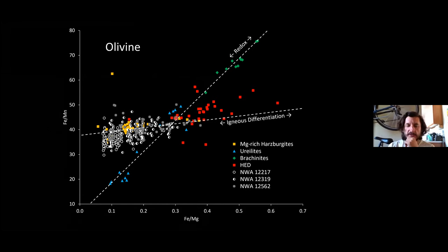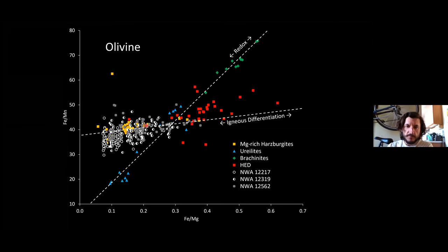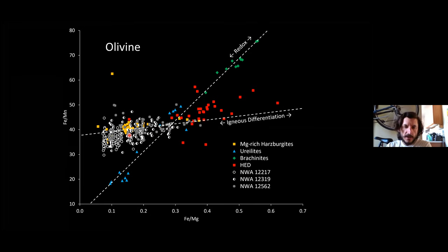Looking at Fe/Mn versus Fe/Mg composition in olivine — the primitive achondrites are on here again forming a redox trend. The brachinites and ureilites plot along this trend, whereas the Mg-rich harzburgites and HED meteorites are out here. The ultramafic achondrites form a pretty clear linear trend along with igneous differentiation. Carl cautions that olivines in eucrites can be tricky — some are late-stage or formed by secondary processes and may not represent primary magmatic olivine.